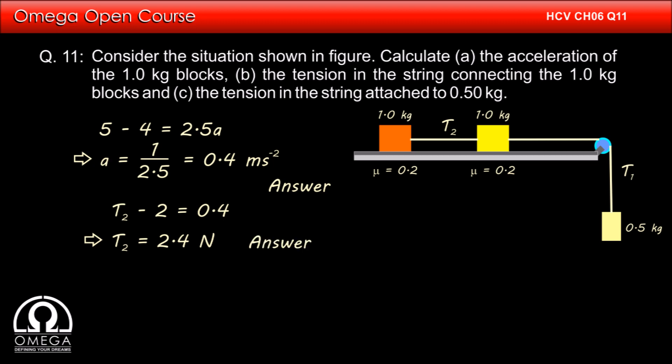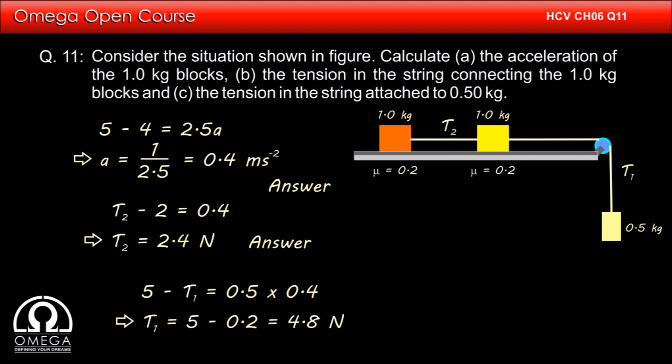Putting the value of a into equation 1: 5 minus T1 = 0.5 × 0.4, which implies T1 = 5 minus 0.2 = 4.8 N. This is the answer to part (c).